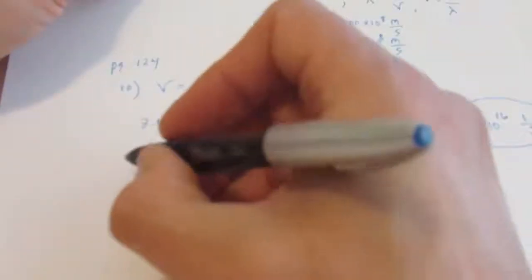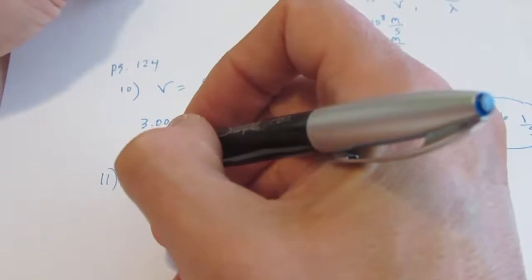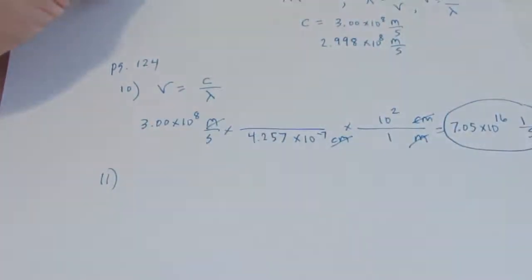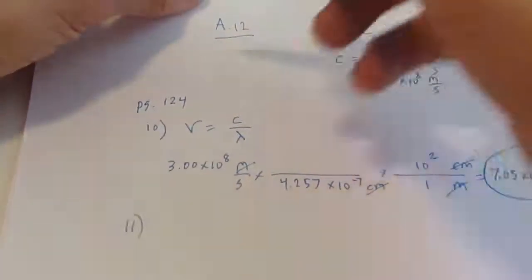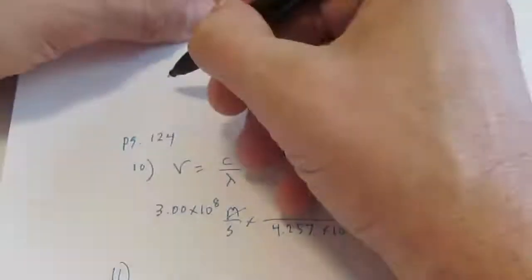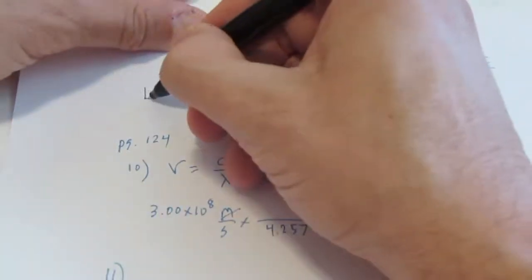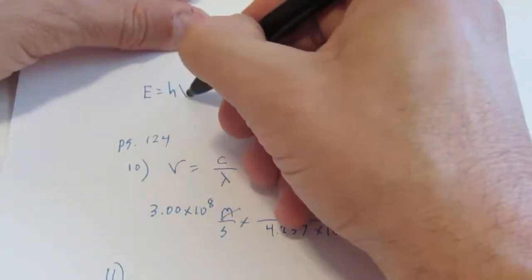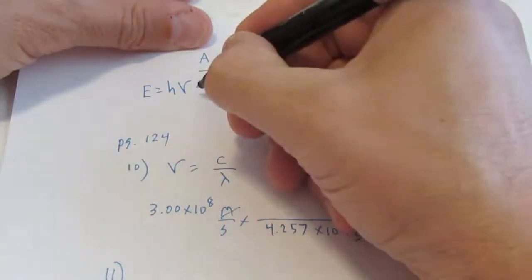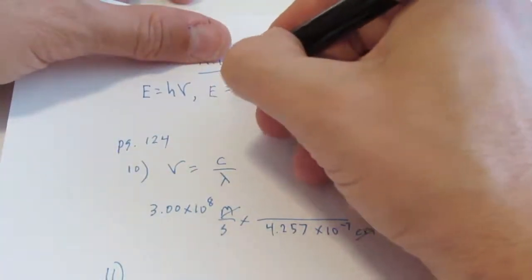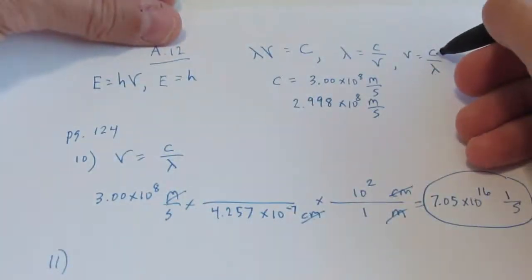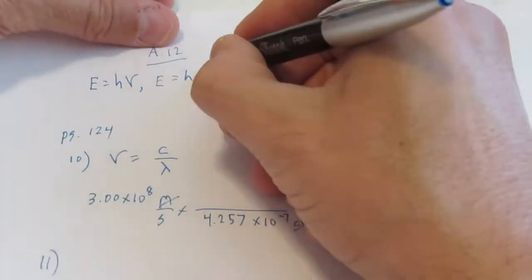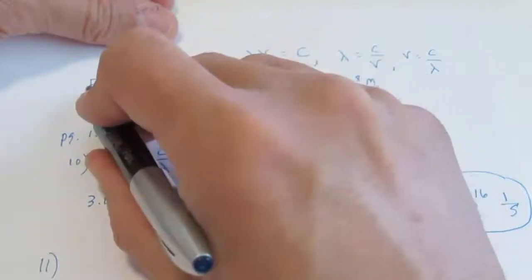Alright, let's do number eleven. On number eleven, this time I want to determine the energy. We need to give you another equation here that I didn't get to in video number one — we're going to get to it right now. The next equation is E equals h times nu, the frequency. Or another way to write that is E, the energy, equals h times c over lambda, since nu is the same as c over lambda. So either one of these works for us to calculate energy.